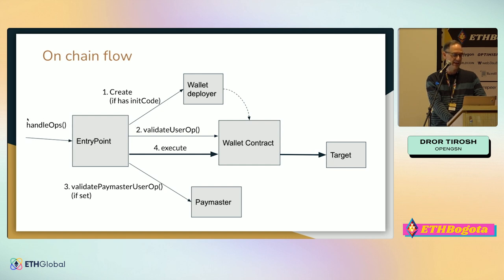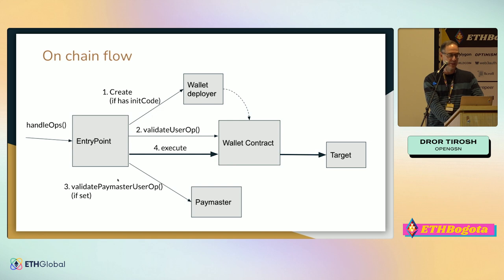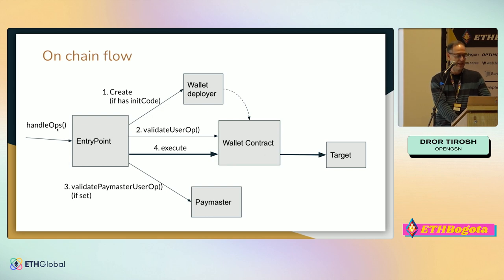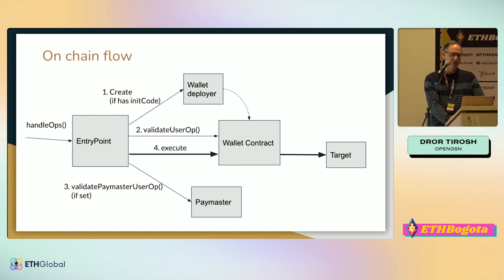If we look at the on-chain flow: once a node sends a user operation, there's a single method in the entry point called handle ops to send a transaction. The transaction goes through four steps. The first step, if needed, is to create the wallet if it has an init code — it will deploy the wallet contract if needed. Once deployed, the validate user op method is called, which validates the signature, nonce, and everything, and pays if needed. If there is a paymaster, it is consulted whether it wants to pay for this transaction, otherwise the transaction will be rejected. Finally, the transaction will be executed on-chain via handle ops. It can be a bundle — that's why we call it a bundler — with multiple ops in a single request. This is something the wallet doesn't care about; it's a system optimization.